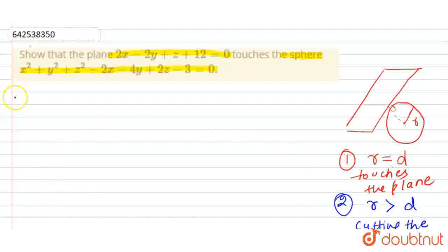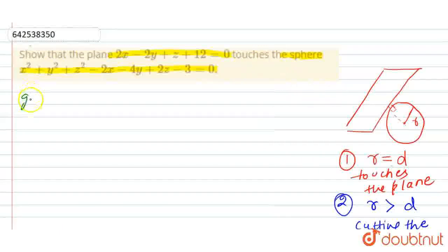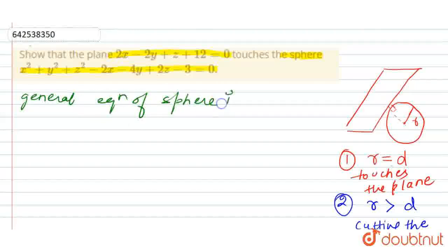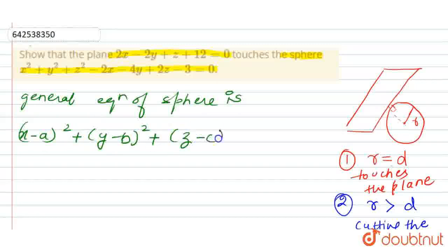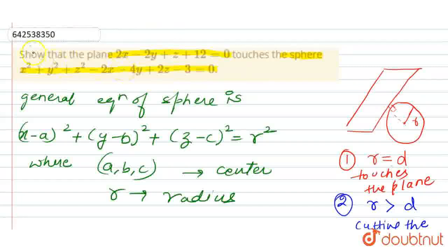Now, as we know, the general equation of a sphere is: (x minus a) squared plus (y minus b) squared plus (z minus c) squared equals r squared, where a, b, c is the center point and r is the radius. We are given the equation of the sphere as x squared plus y squared plus z squared minus 2x minus 4y plus 2z minus 3 equals 0.